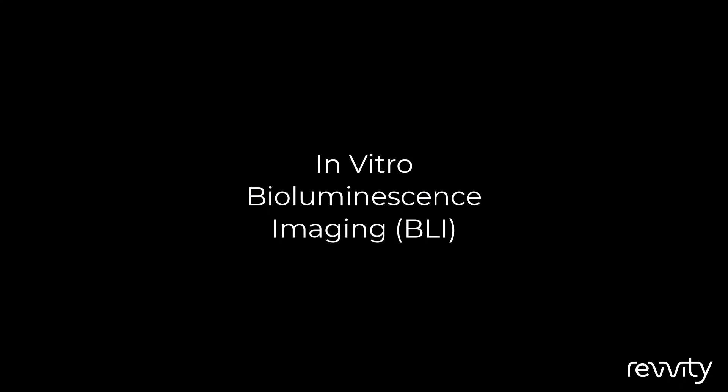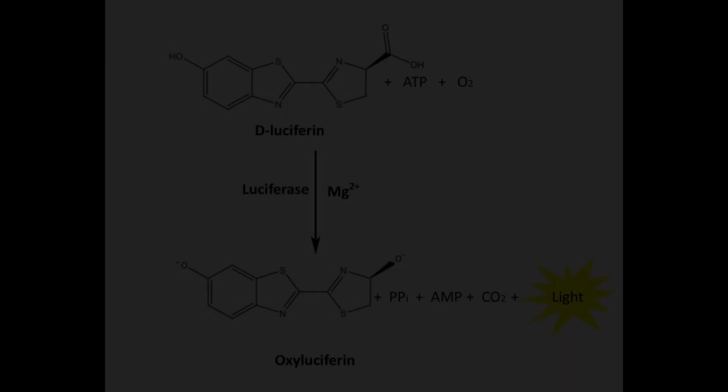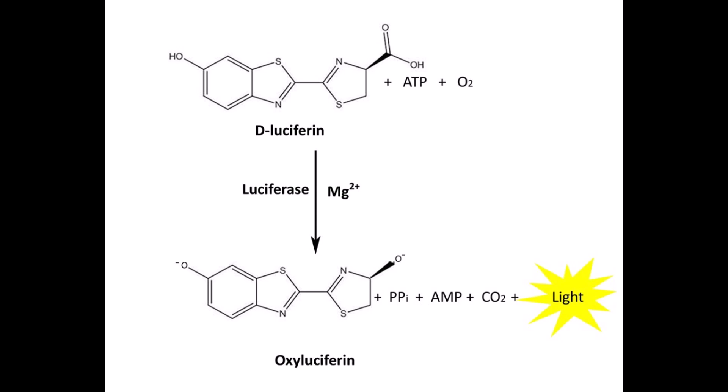In this video, we're going to discuss procedures and considerations for in vitro bioluminescence imaging on the IVAS platform. Production of bioluminescent light occurs when, for instance, firefly luciferase engineered into cells enzymatically catalyzes the chemical degradation of its injected target substrate, diluciferin, in the presence of ADP and oxygen, thereby serving as an excellent readout of living viable cellular or genetic activity.